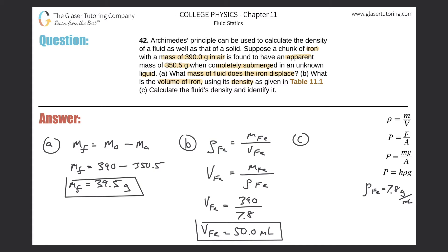Now, last but not least, let's move on to letter C. Calculate the fluid's density and identify it. So the important finding here, remember, we talked about this before, that the volume of fluid displaced will equal the volume of the object submerged. This is always true, assuming the object is fully submerged, not partially, fully.